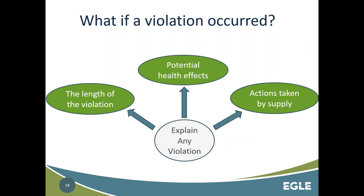If a violation occurred during the year covered by the CCR, you are required to explain it, including the length of the violation, potential health effects if related to a specific contaminant, and any actions your supply took to correct it. If it hasn't been corrected yet, you can explain actions you're planning to take in the future. Violations older than the year covered by the report do not need to be listed — the five-year rule applies only to data, not violations.